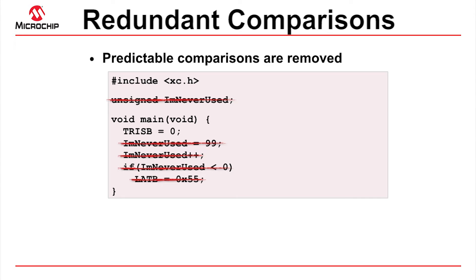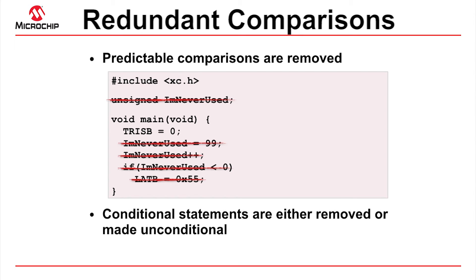When optimizing if statements, the compiler will remove the true substatement if the controlling expression is always false, or make the true substatement unconditional if the expression is always true. If there is an else part to the comparison, its false substatement is optimized in the same way, but with the reversed sense of consideration. Specifying 'I'm never used' as volatile in this example will defeat this optimization.